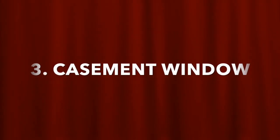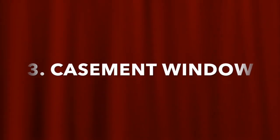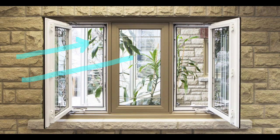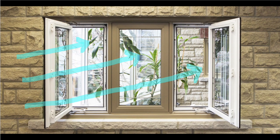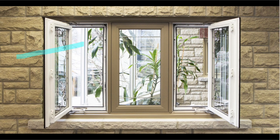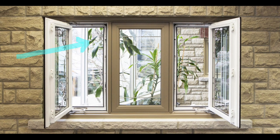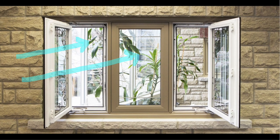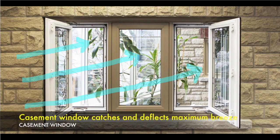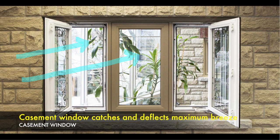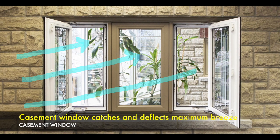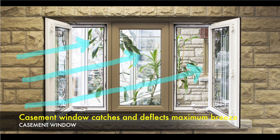3. Casement window. The sashes of the casement window open perpendicularly to the window, allowing ventilation through the entire window area. Use casement windows to catch and deflect maximum breeze from varying angles.